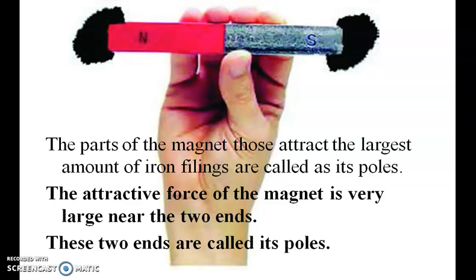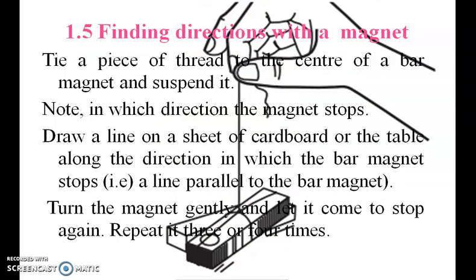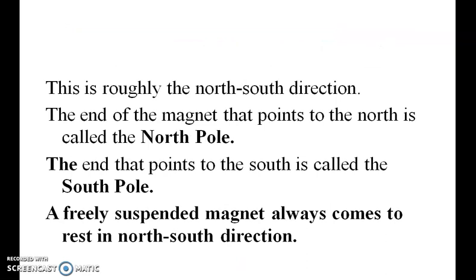The parts of the magnet that attract the most iron filings are called poles. The attractive force of the magnet is very large near the two ends. These two ends are called its poles. To find direction with a magnet, tie a thread to the center of a bar magnet and suspend it. Note the direction the magnet stops — this is roughly the north-south direction. The end pointing north is called the north pole, and the end pointing south is called the south pole. A freely suspended magnet always comes to rest in the north-south direction.